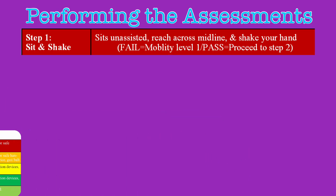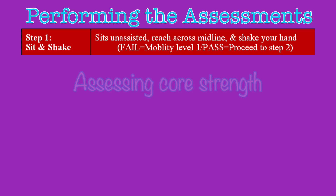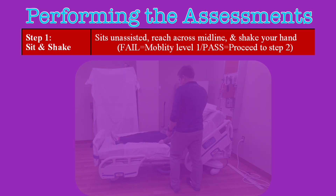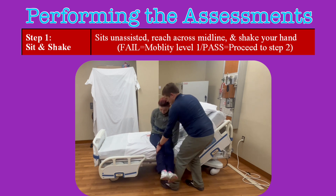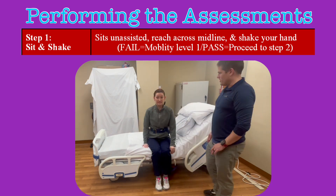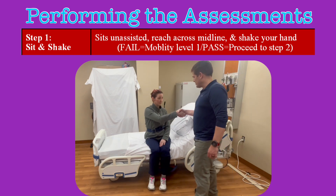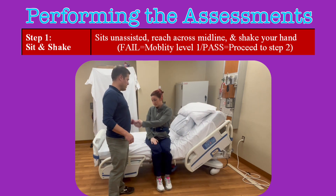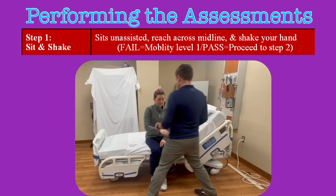Step one is sit and shake. With this step, you are assessing basic core strength — do they have the strength to maintain their balance when seated? The patient must be able to sit unassisted. You are allowed to assist the patient into a seated position, but they must be able to maintain that position without your aid. If they demonstrate the ability to sit and support themselves, ask them to shake your hand, making sure that they have to reach across their body to shake your hands. By reaching across midline, they are forced to twist their body and core, further testing their seated balance. Have them shake with both hands, crossing midline with each arm.